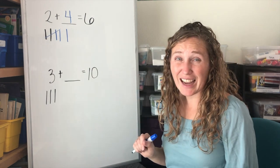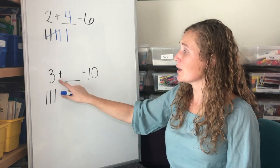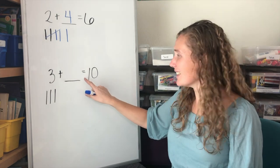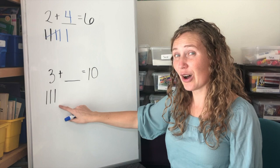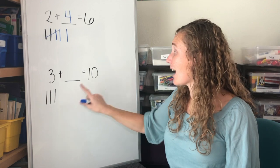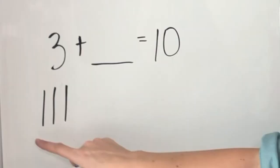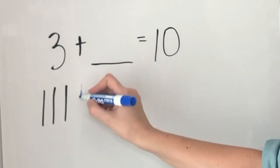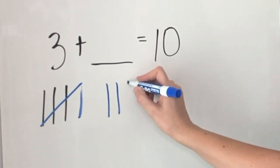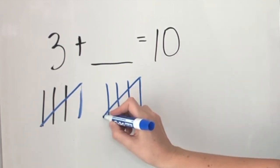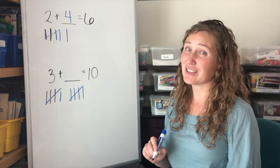Let's try it again. Three plus what equals ten? We have three already. Let's count up to ten. Three, four, five, six, seven, eight, nine, ten. We have ten tallies.